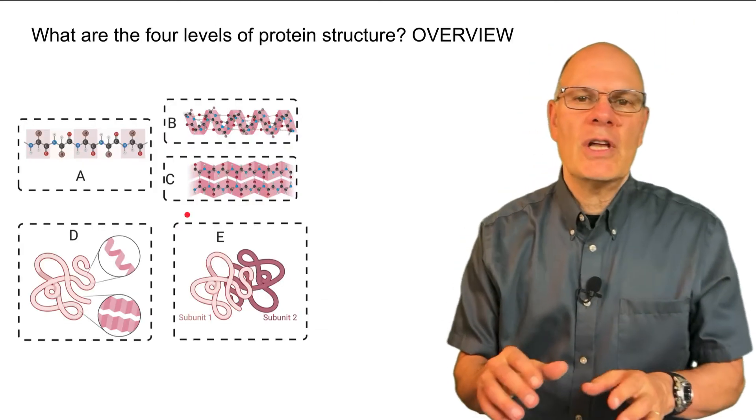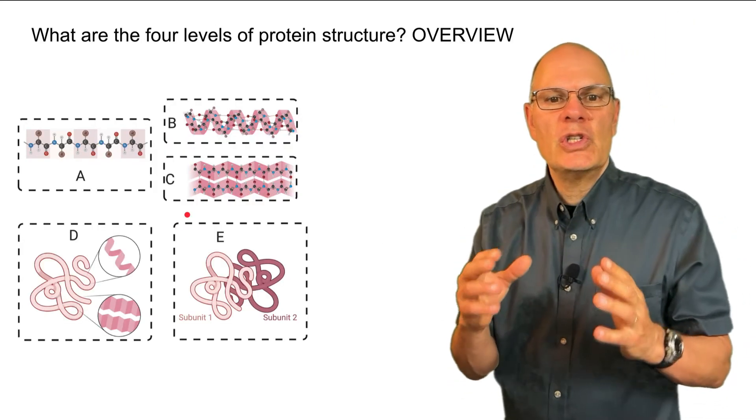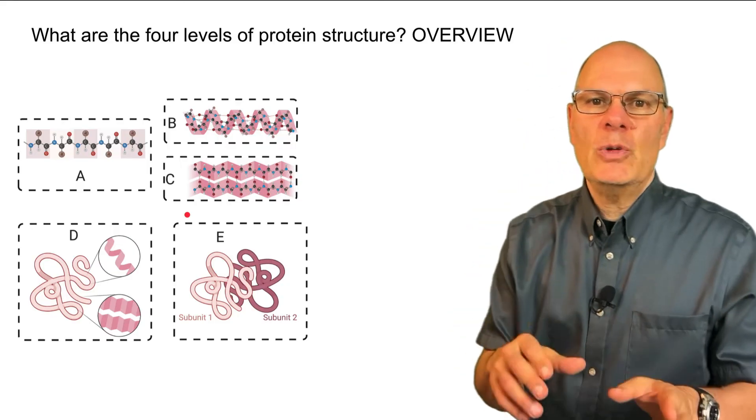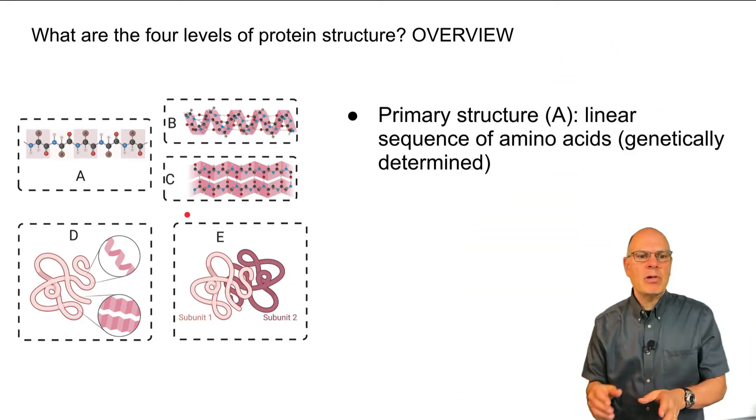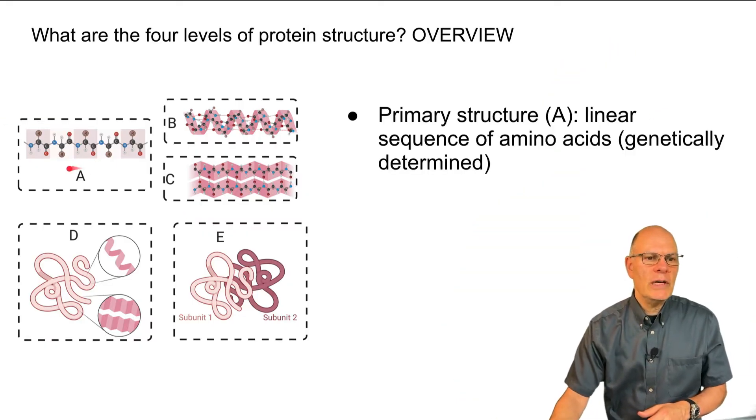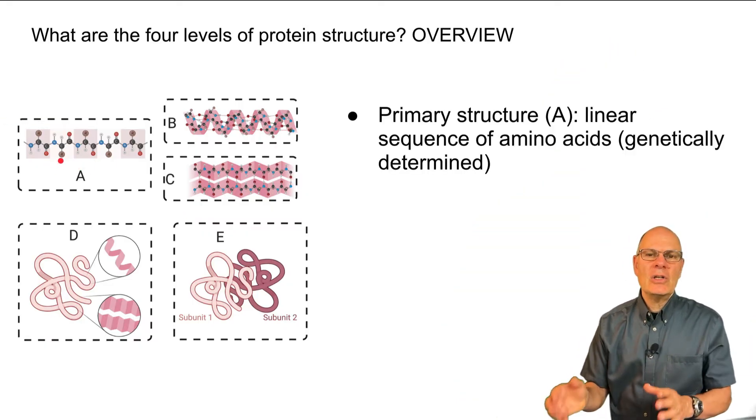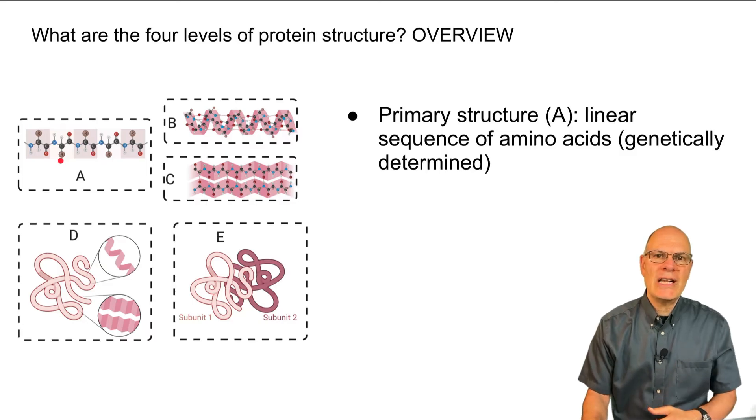There are four levels of protein structure. This is a super important topic. We're going to do an overview and then we're going to walk through all four of these levels. Primary structure is what's shown over here in A. It's a linear sequence of amino acids. It's genetically determined.